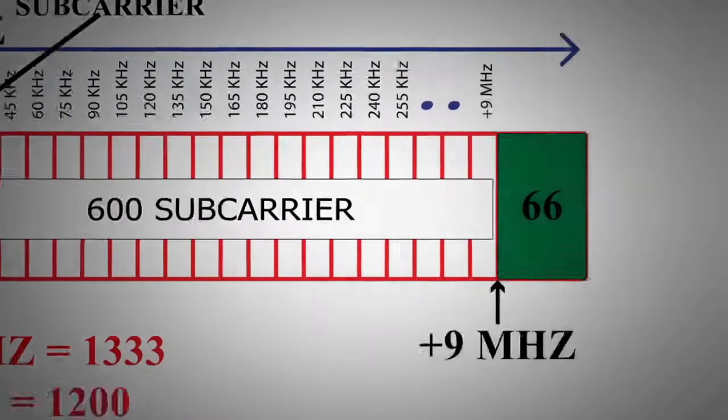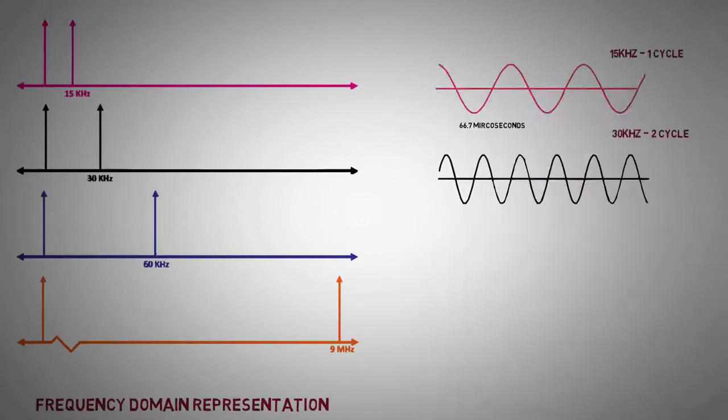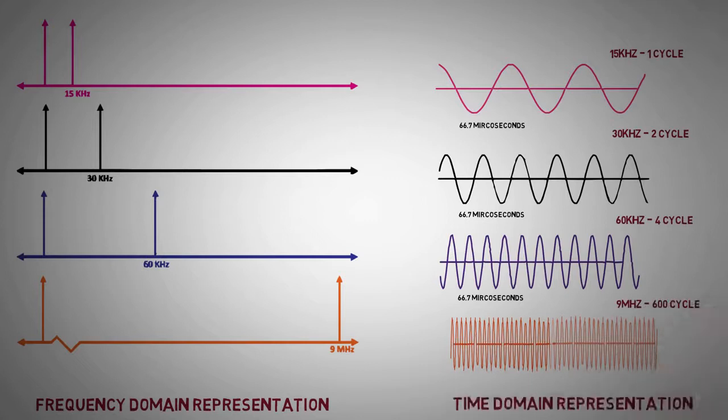In time domain, these sub-carriers will be represented as everlasting sinusoids at these carrier frequencies as shown. However, in order to transmit data over these sub-carriers, they are loaded with modulation symbols.